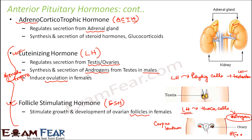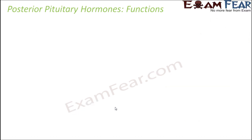LH will induce ovulation and FSH will induce the growth and development of the follicles, be it the ovarian follicle or the corpus luteum. So these were all the hormones secreted by the anterior pituitary gland.